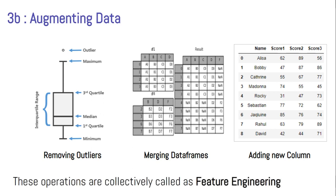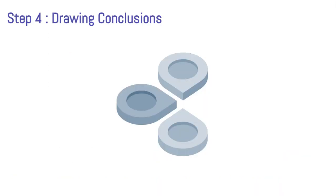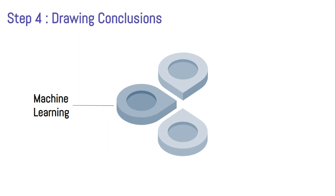So whenever you are augmenting data — making changes to your data on your own — this entire process is called feature engineering. Feature engineering can be very important at times. That was exploratory data analysis. Let's move on to the fourth step — drawing conclusions. Now that you have a fair idea of your data, you are in a position to draw conclusions, or in data science you can make predictions using two techniques: machine learning algorithms when you need to make predictions, and sometimes inferential statistics.